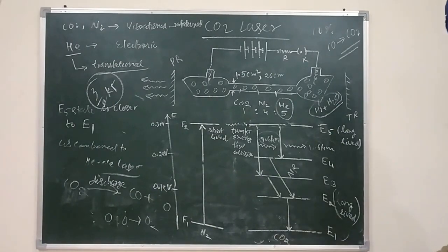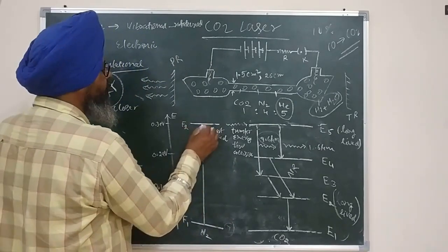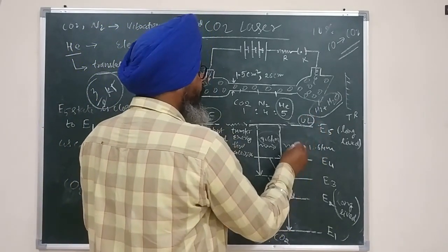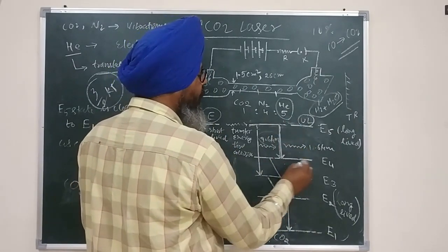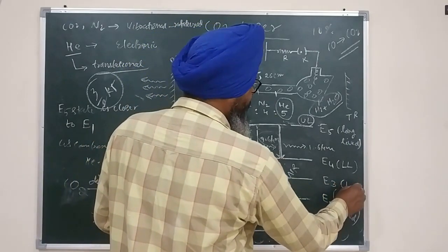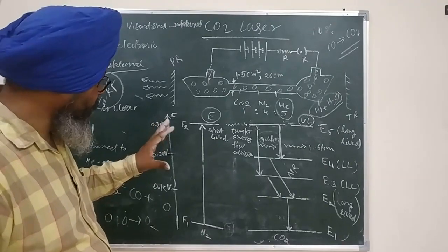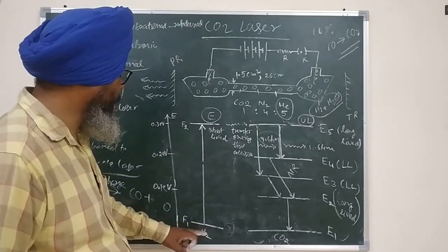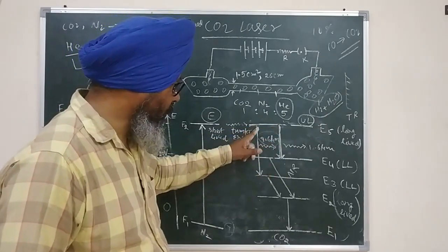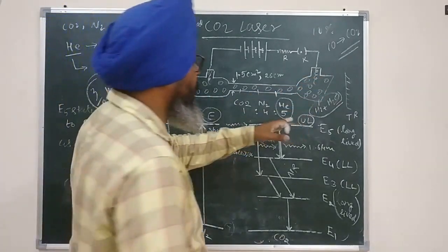In summary, helium is added to increase the effective thermal conductivity of the gas mixture. With external cooling applied, the CO2 gas cools rapidly by transferring vibrational energy to helium, which in turn loses thermal energy to the tube walls. The CO2 laser is a four-level laser: F1 of nitrogen acts as the ground level, F2 as the pumped level, E5 as the upper lasing level, and E4 or E3 as the lower lasing level depending on the transition.